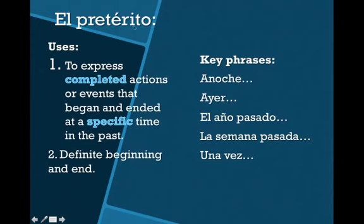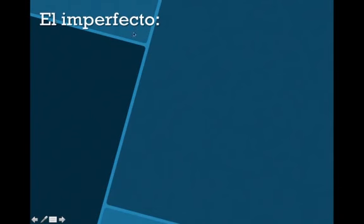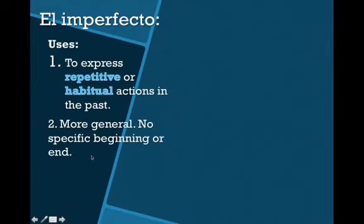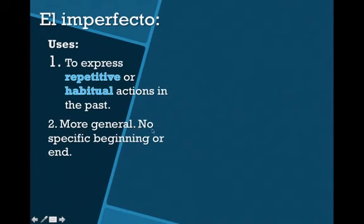That's why we associate el pretérito with precision — it's specific. On the other hand, you have el imperfecto, which is just what it sounds like. It's imperfect. It's not as precise. It's more general. The imperfecto is used to express a repeated action or something that happens on a regular basis, or things that are habitual. You use the imperfecto to talk about things that you used to do on a regular basis, or to describe what something looked like in the past. The imperfecto is more general — there isn't usually a specific beginning or end. It's more of a cloud of time, a not very specific period of time.